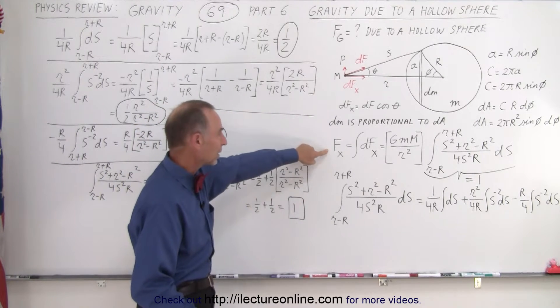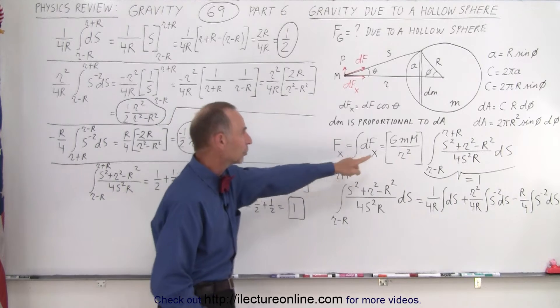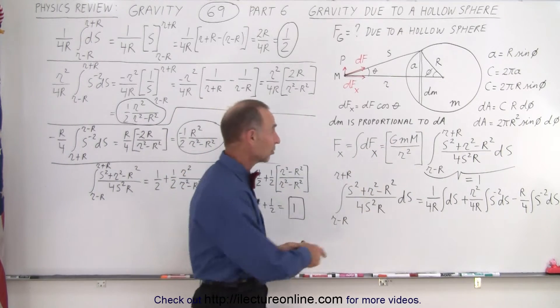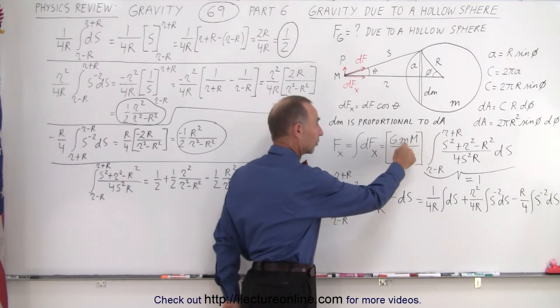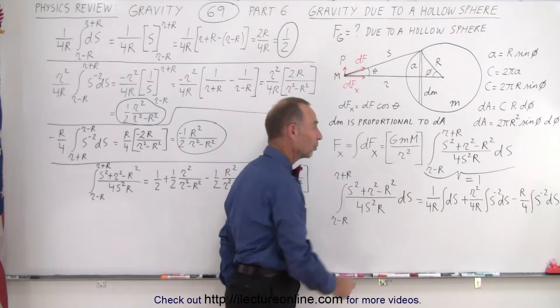And we ended up with this equation right here, that the force of gravity is indeed equal to the familiar equation: g, the product of the two masses, divided by the distance between them squared.